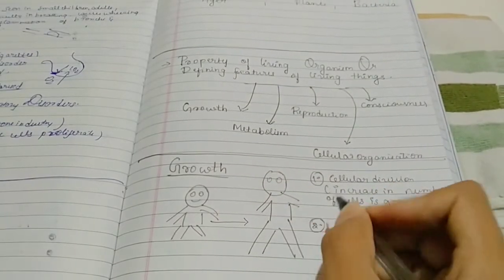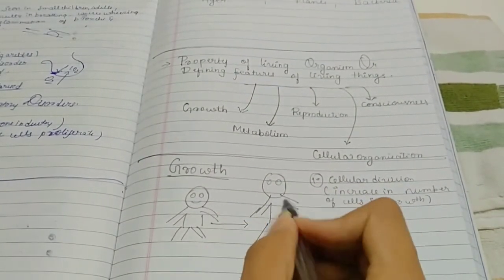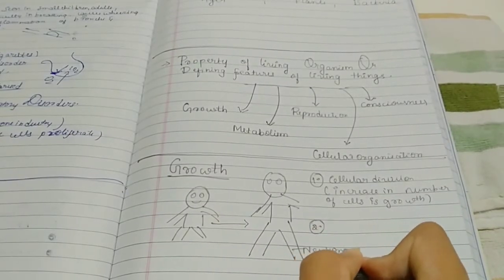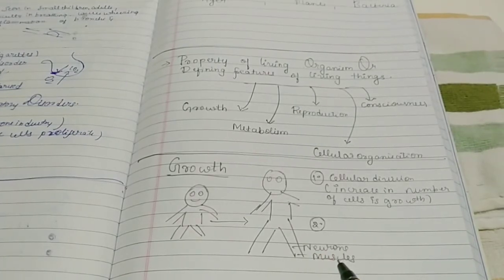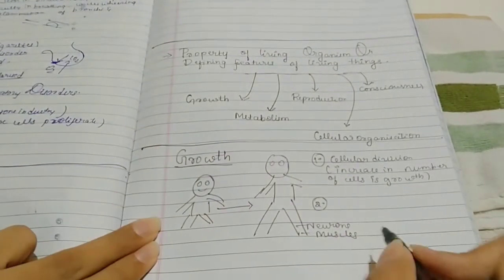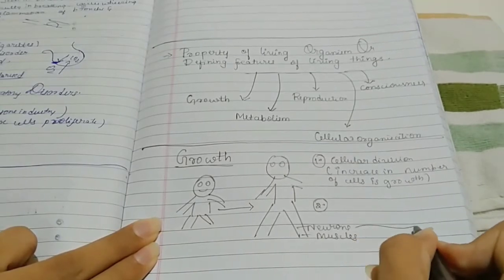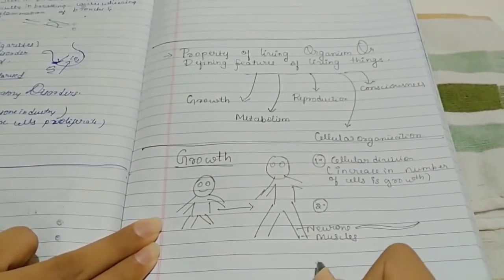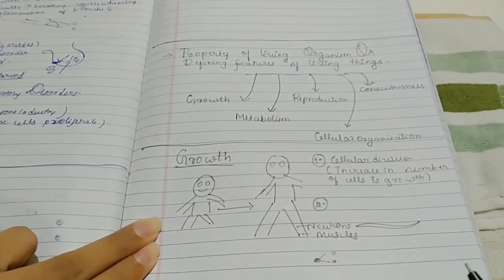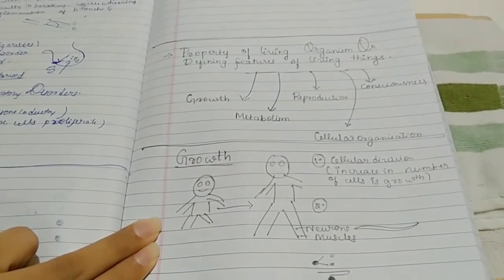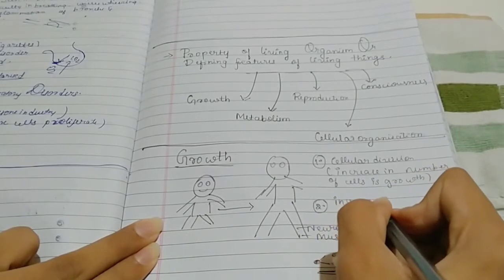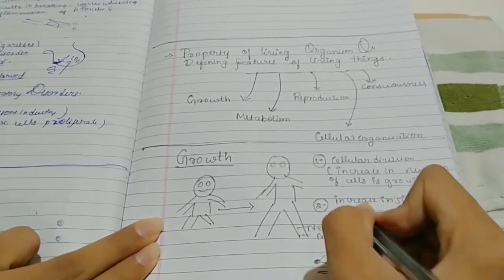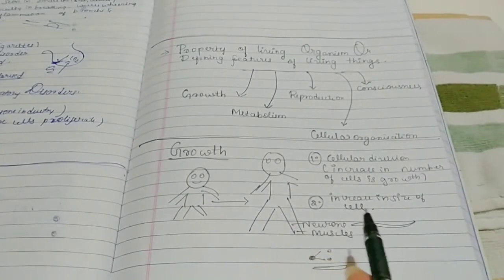Second point on growth: our body cells grow and divide. But in our body, neurons and muscles have poor cell division property — they cannot divide much. So in those cells, instead of cell division, there is an increase in length. For example, a single neuron — it doesn't divide into two neurons, but that one neuron expands. So the second point: increase in size of cell is also called growth.